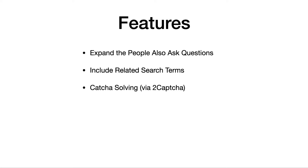So as I mentioned, with this bot you can add a list of keywords and decide how many clicks to expand the People Also Ask questions. I found that when you expand more than maybe seven or ten clicks, the results are not that targeted anymore. But you do have the option to choose how many clicks you want the bot to expand the People Also Ask questions.